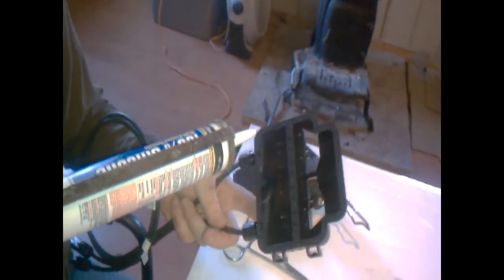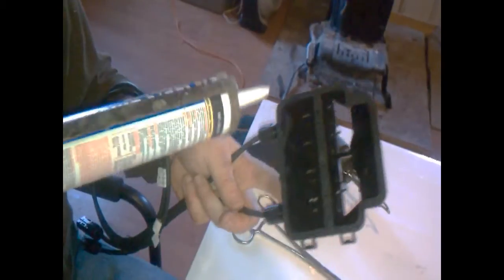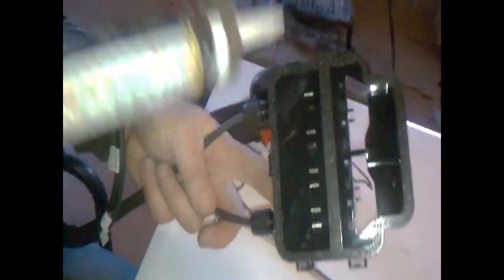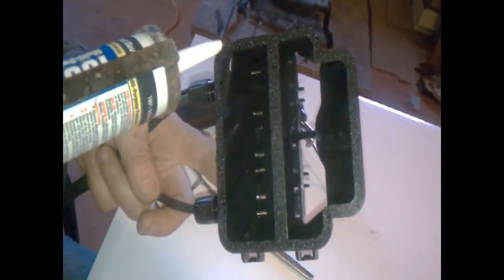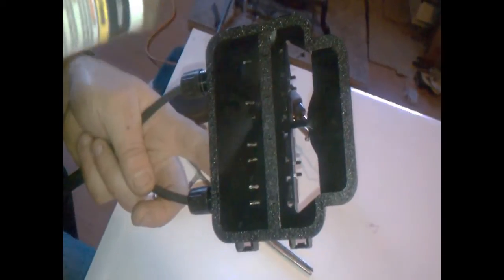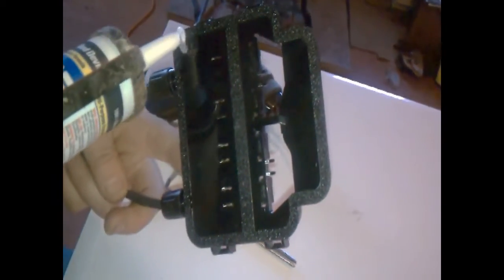So here is our junction box. And we're going to put it on with silicone. You can get this at your hardware store. Basically everything we've got here except for the box and the panel is available at your local hardware store. So we're going to put silicone around the edge. As you can see it's got a textured foot to put the silicone on.